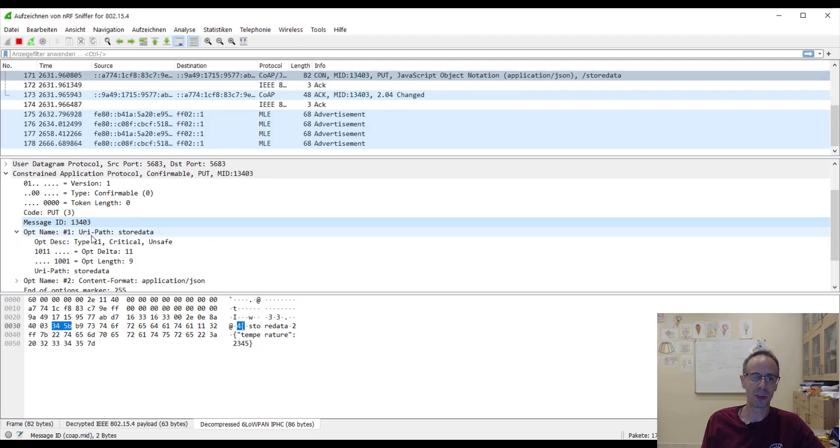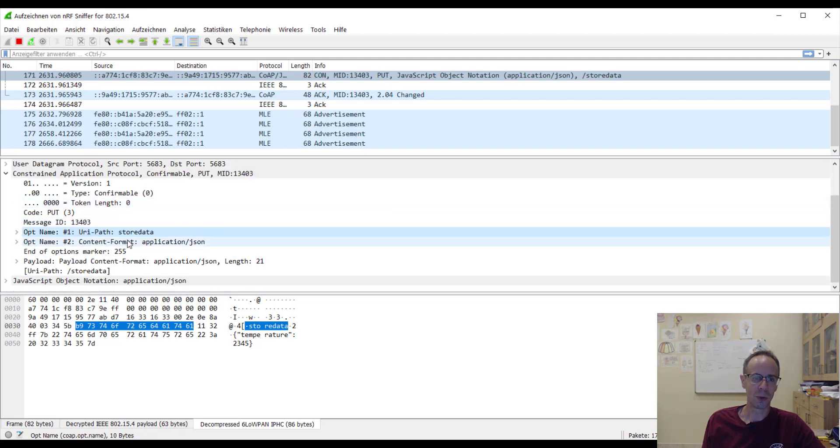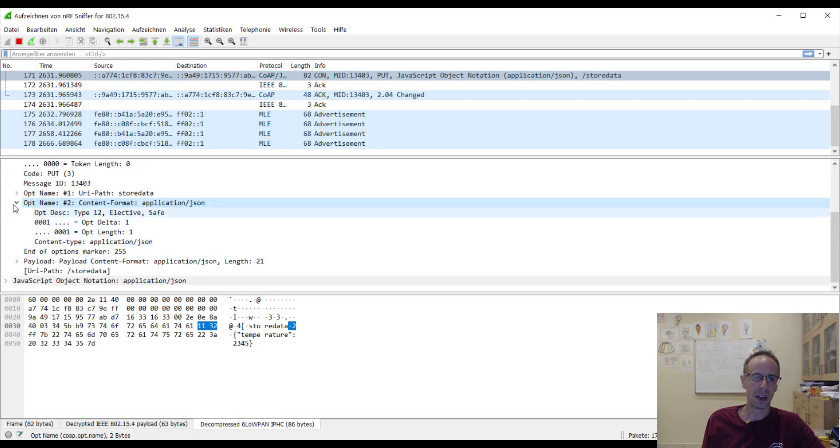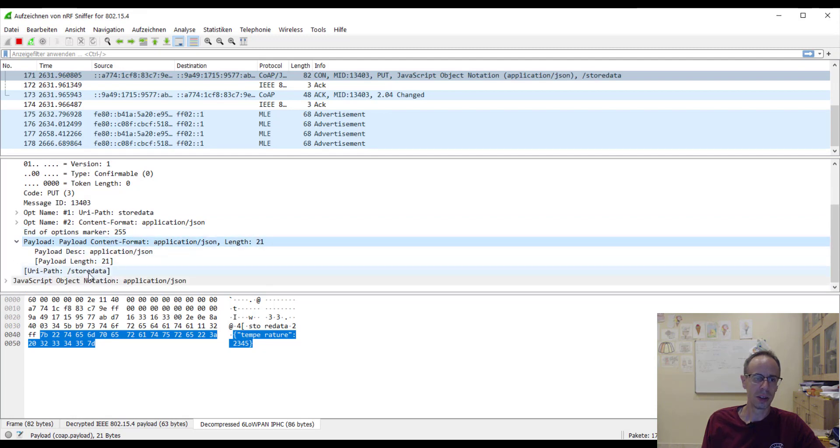Then we're having the status code—it's a PUT request—and followed with a message ID. And here we're having the two additional options. The first one is the URI path—here it's store data—and the second one is a payload format, which is in this type JSON. And when I look in the payload, I can also see that the payload here we're having the temperature and it's in JSON format here.